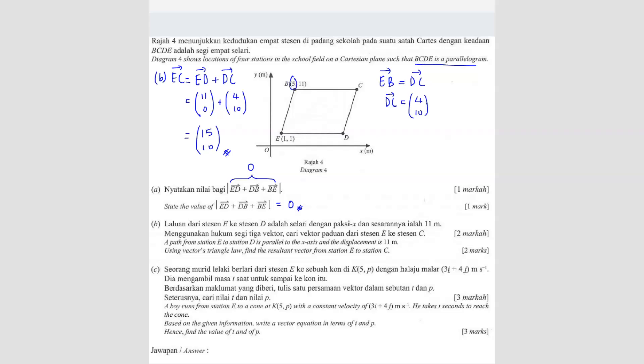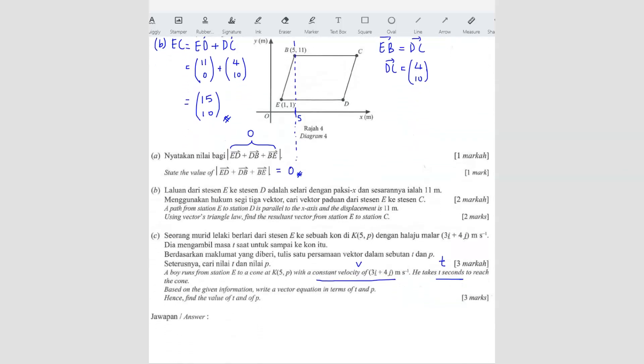5P, right? So 5 is actually same as the X value of B. So that means it's going to be on one of this line anywhere on this point because here we know it's five. So K can be here. K can be here, can be anywhere. It can also be at the bottom. We don't know where it's K, right? But we know that it's going to be on that line there with a constant velocity. Oh, so they give you velocity here. So they give you velocity. He takes T seconds. So this is the time to reach the cone. Based on the given information, write a vector equation in terms of T and P, hence find the value of T and P.